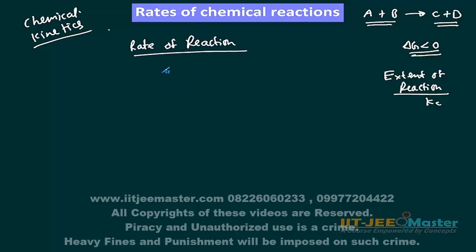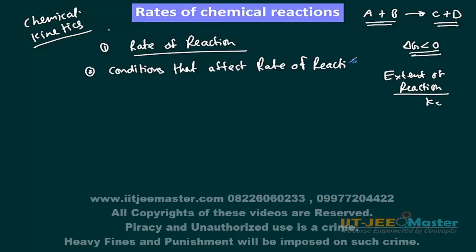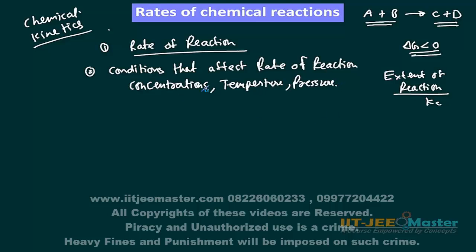First we have to learn to measure the rate of reaction, and the conditions by which the rate of reaction is affected. Conditions that affect rate of reaction — our first condition is concentration of reactants. Secondly, the most important condition is temperature. Then pressure — in the case of gaseous reactants, pressure is also important. And catalyst — if catalysis is there, then catalysts are also important.